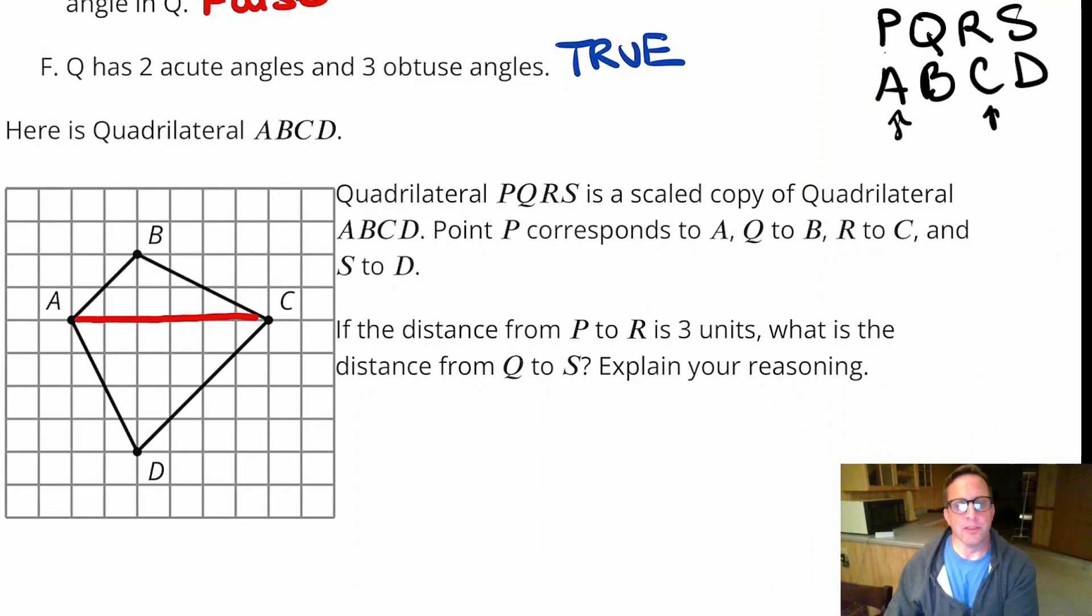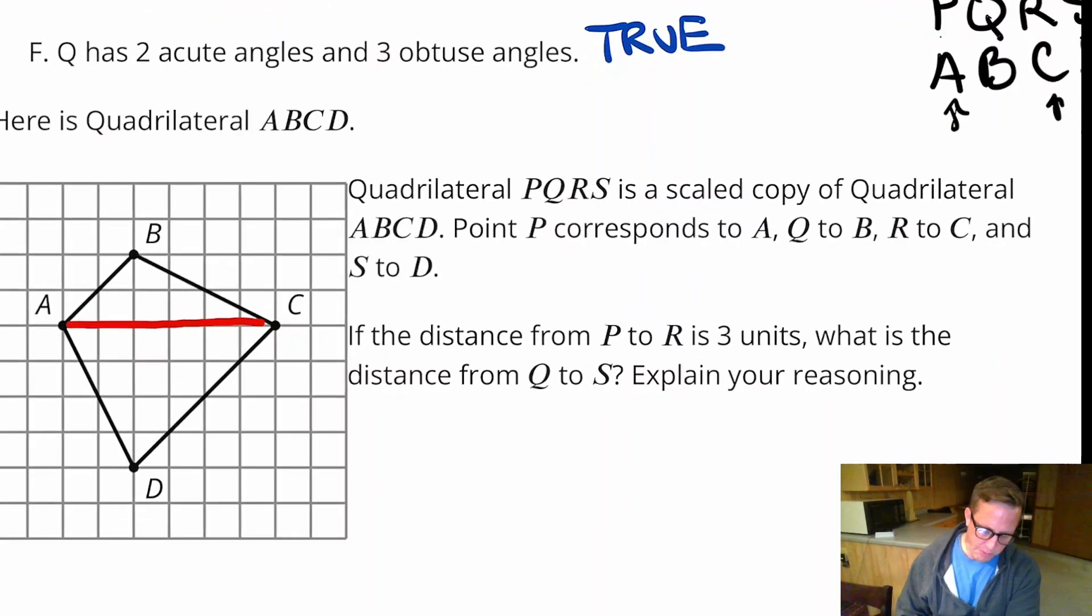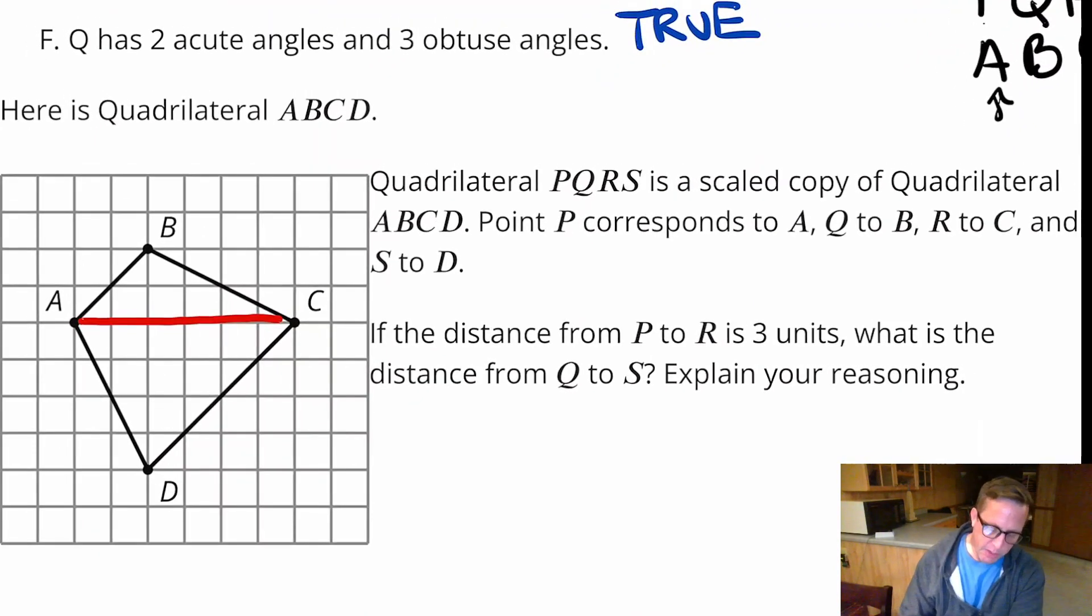So, we look at the distance right there. The distance from A to C is three. What is the distance from Q to S? So, that's three units. Now, what is going on here?